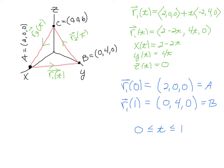I'm simply just going to combine these two vectors. So in the first component, I have 2 plus -2t, 0 plus 4t which is just 4t, and then 0 plus 0 which is 0. And then the X component is 2 - 2t, the Y component is 4t, and the Z component is 0.